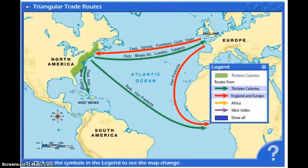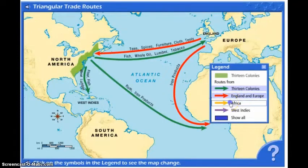Also leaving England, you see iron products going to Africa. And you probably have a good idea what's going to be coming from Africa — obviously, we know slaves are going to be coming from Africa.